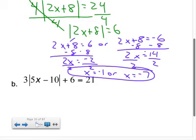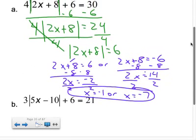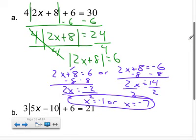And again, the nice thing about this is at the very end, you can take those two values, plug them back into the original, and verify that it works out. So when I plug in negative 1, I get 2 times negative 1, so that's negative 2, plus 8 is 6. Absolute value of that is 6. 6 times 4 is 24, plus 6 is 30. Check.